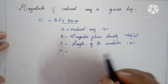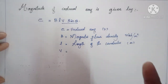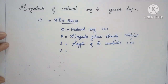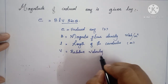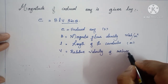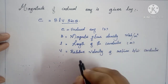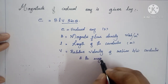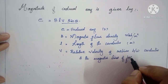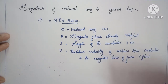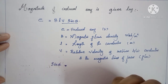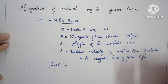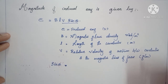V is not voltage but the relative velocity between the conductor and the magnetic lines of force. Sinθ is the sine of the angle between the axis of the plane of magnetic lines of force and the axis of the plane of motion of the conductor.